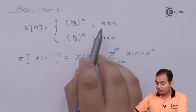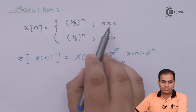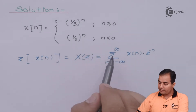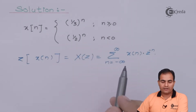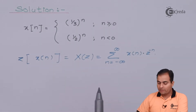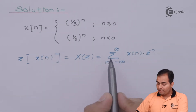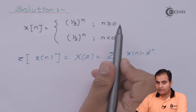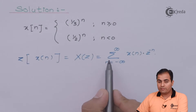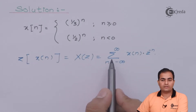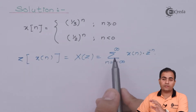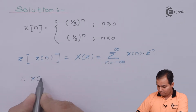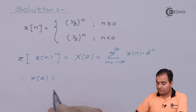If the question were one-sided you could use the unilateral property, but since this question is bilateral, we use the bilateral definition. X(n) is available on both the negative and positive sides, so our summation will be split into two parts — the first for the left-hand side and the second for the right-hand side. We are going to calculate X(Z) in two parts.